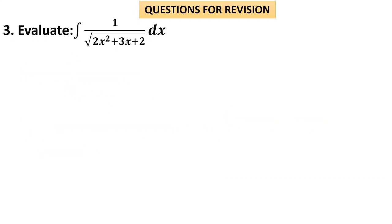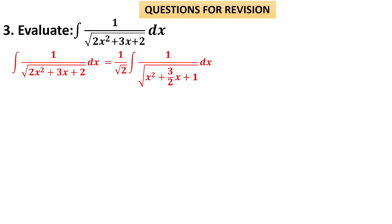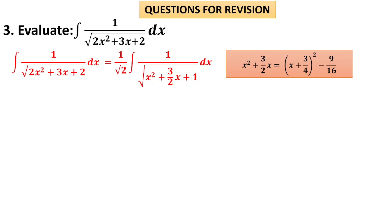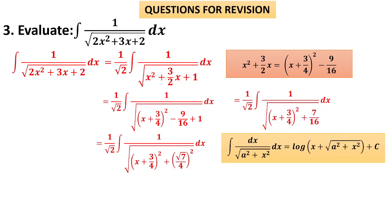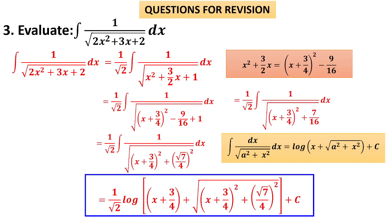Let us move on to a problem where the coefficient of x² is other than 1 — you must take it out. It will come out as 1/√2, giving ∫dx / √(x²+(3/2)x+1/2). Now complete the square: x²+(3/2)x = (x + 3/4)² − 9/16. And 1/2 − 9/16 = 7/16. This is the a²+x² form with x replaced by (x+3/4). The answer is (1/√2) · log(x + 3/4 + √((x+3/4)²+7/16)) + c. You can simplify inside the square root or leave it as is.